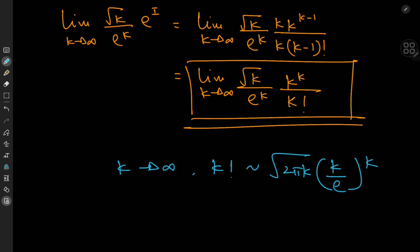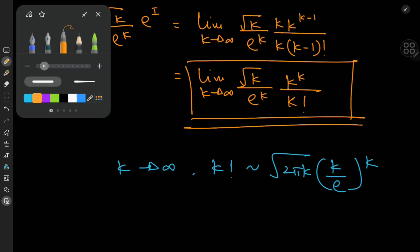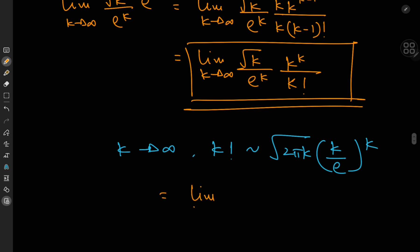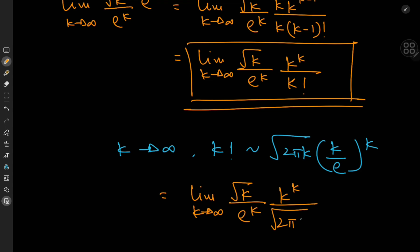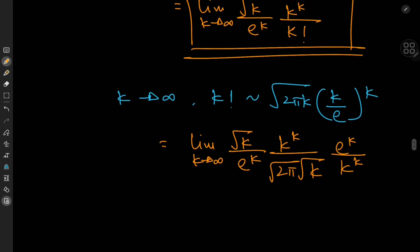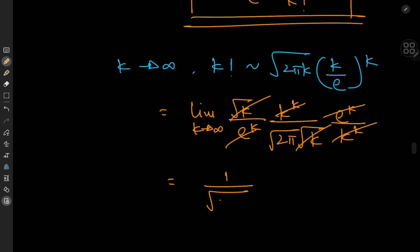Substituting Stirling's approximation, we have the limit as k tends to infinity of root k divided by e^k times k^k, with 1 over k factorial now replaced by e^k divided by (root(2π) times root(k) times k^k). Look at how perfectly this problem is crafted — all the terms cancel beautifully: e^k cancels, k^k cancels, root k cancels, and we are left with 1 over root(2π). I was still laughing while solving this. It's just brilliant.